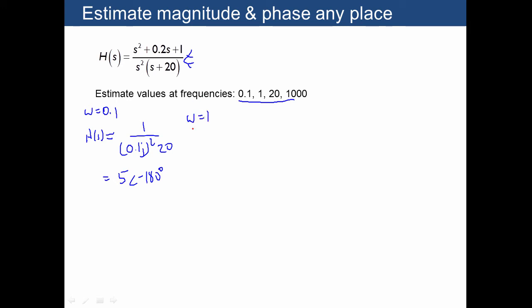For omega equals 1, when we plug in 1 times j, that's going to cancel here, so we get 0.2 j divided by j times 1 squared. The j times 1 is much smaller than the 20, so we consider that to be 20. What we end up with is 0.2 over 20, in other words 0.01, with an angle of 1 j in the numerator and 2 j's in the denominator, giving us negative 90 degrees.